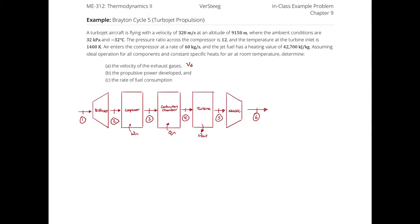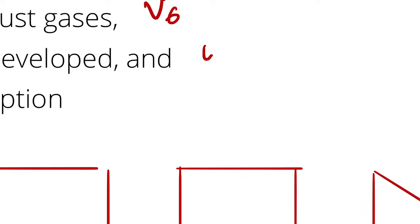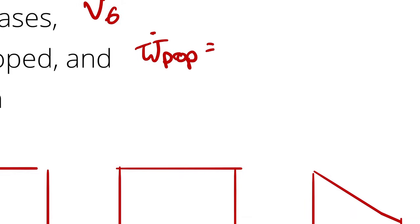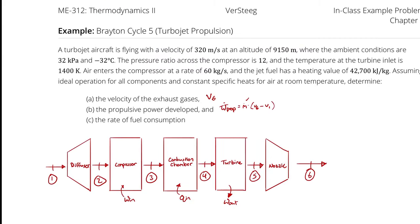For propulsive power, I take the thrust force — the mass flow rate of air times V6 minus V1 — times the engine velocity. We already know the mass flow rate. V6 will come from part A. V1 is 320 meters per second relative to the engine, since we treat the ambient air as stationary at 9,150 meters altitude. So I know V1 and mass flow rate, and will have V6 by the time we calculate part B.